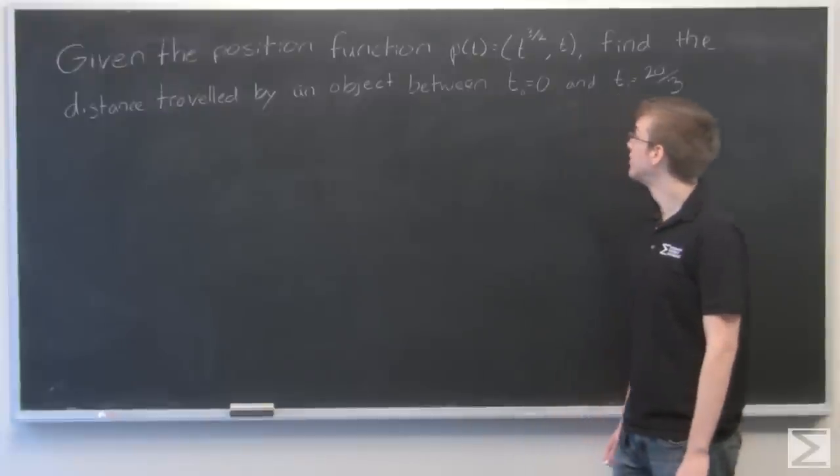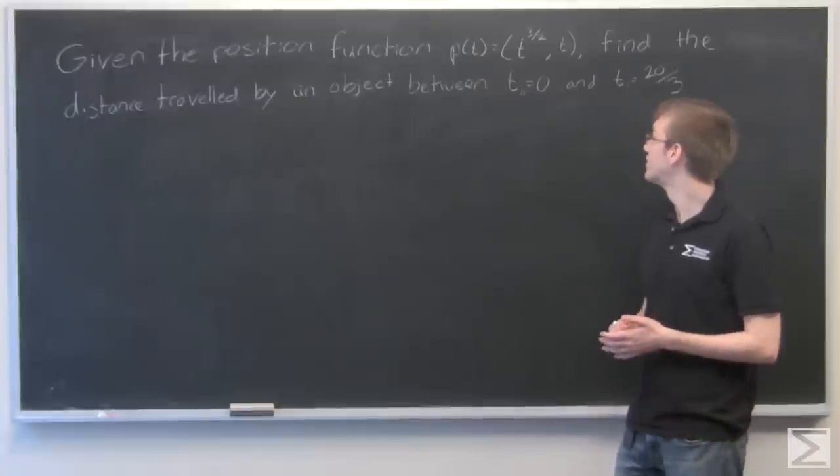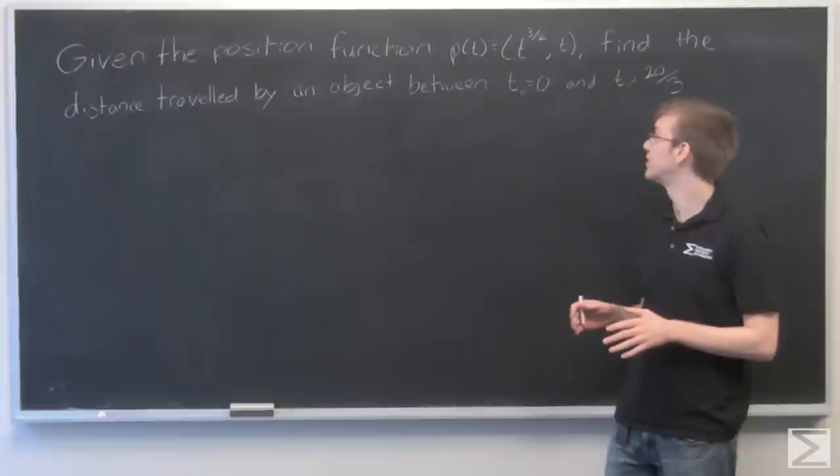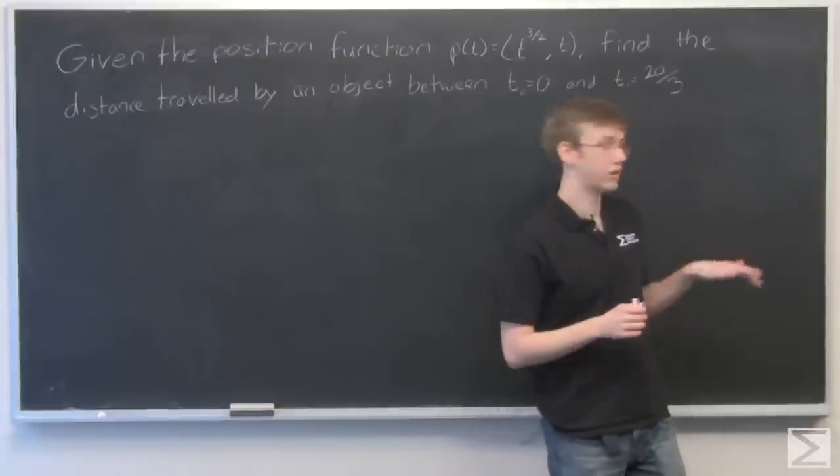Given the position function p(t) equals t to the 3 halves minus t, find the distance traveled by an object between the times t equals 0 and t equals 20 thirds.